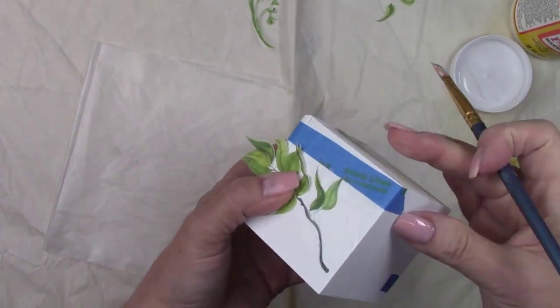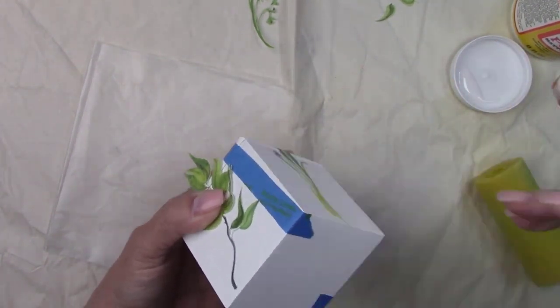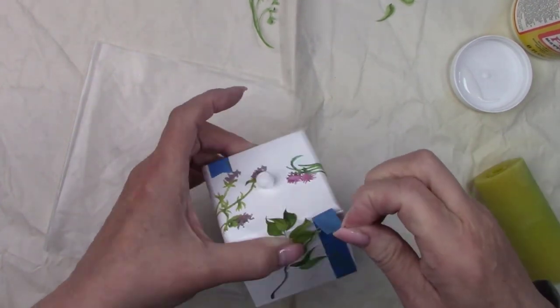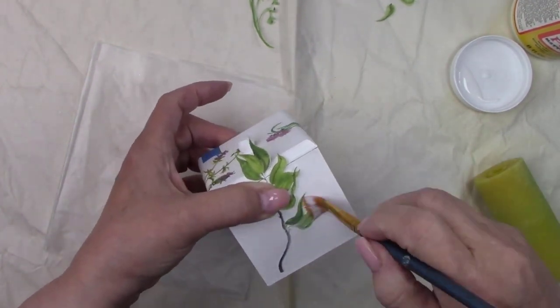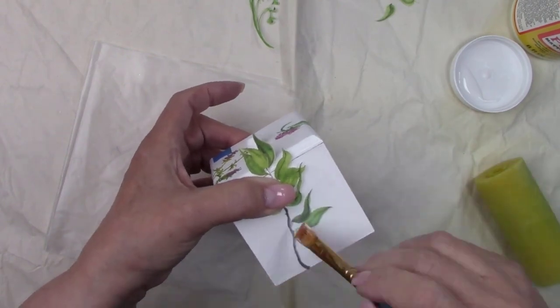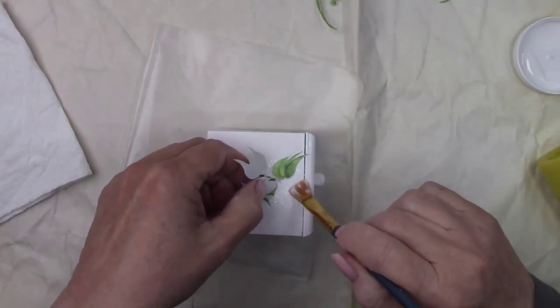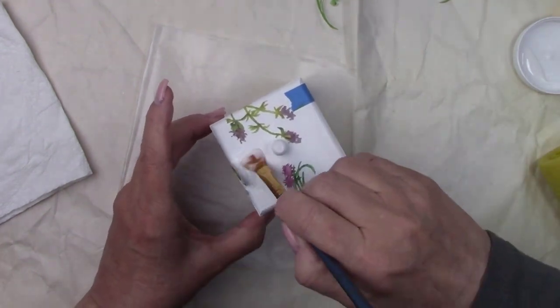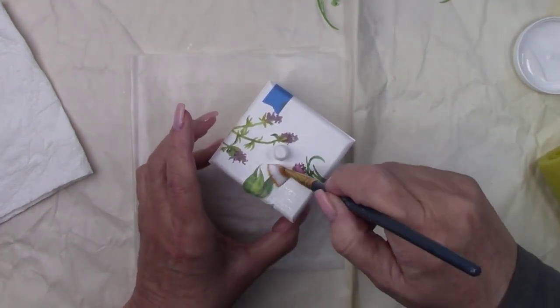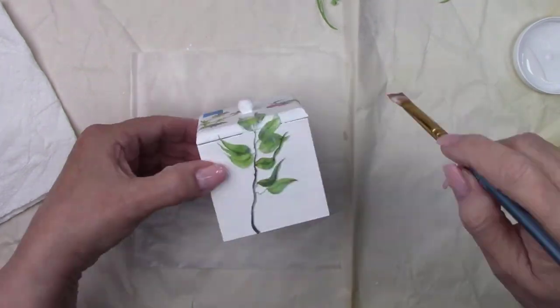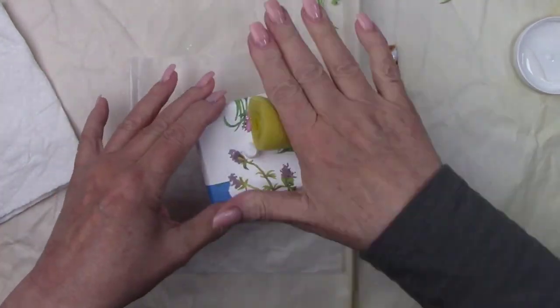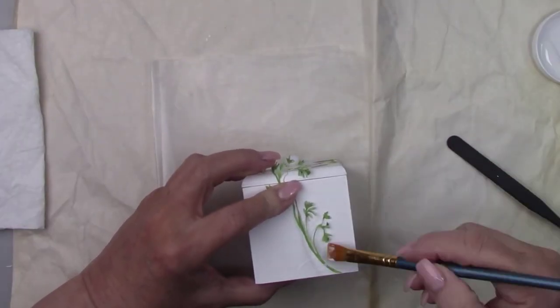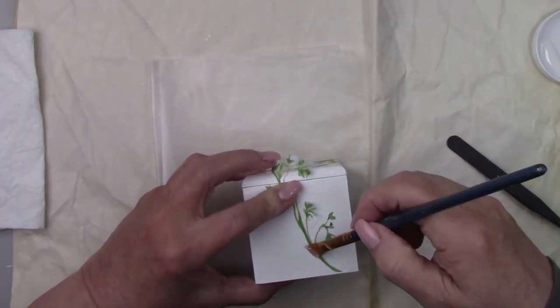Once you have a couple of the images decoupaged on the box, the lid becomes sturdy and you can remove the tape. So tell me what you guys think about this project so far. I think it would look good with a black background too. Tell me in the comments what color background do you think would look good?